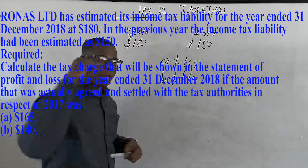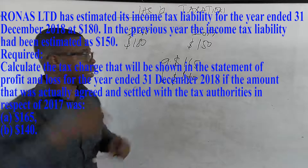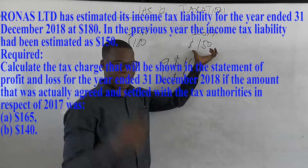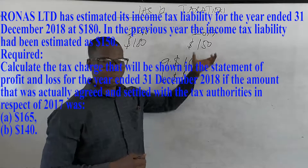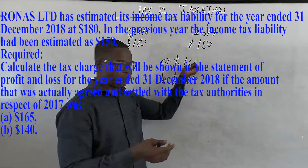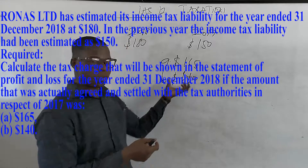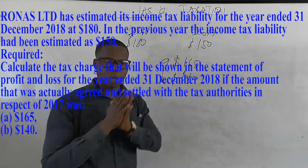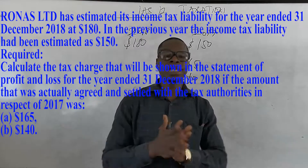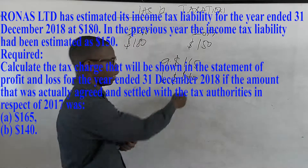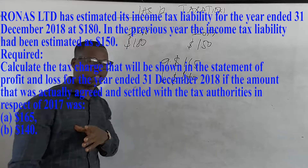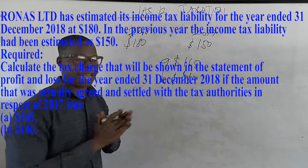The question informs us that $180 is the estimated value in 2018, and $150 is what they estimated and accounted for in 2017. Assuming in 2018 they made payment under these two categories, what will be your tax liability in the books of the entity in December 2018? That is what we are asking under these two scenarios.